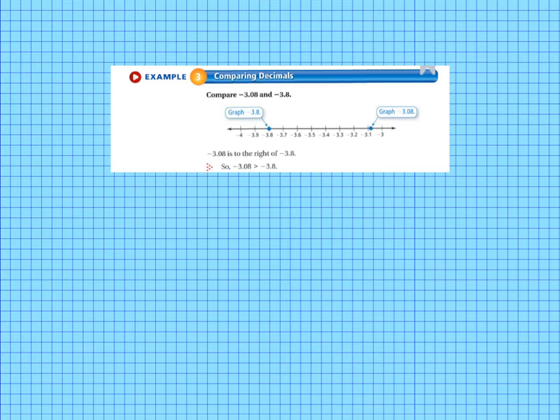Example 3 has us comparing decimals. And we are comparing negative 3 and 8 1 hundredths and negative 3 and 8 tenths. So our number line is marked out for us by tenths. And then you can see where we have graphed negative 3 and 8 1 hundredths. And it is not quite to the negative 3 and 1 tenths. So it's just a little bit to the right of that. And then negative 3 and 8 tenths is down here. So since negative 3 and 8 1 hundredths is to the right of negative 3.8 or negative 3 and 8 tenths, then it is greater than negative 3.8.